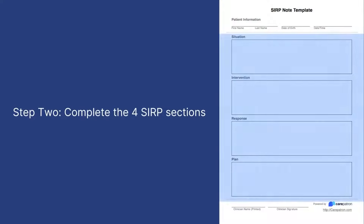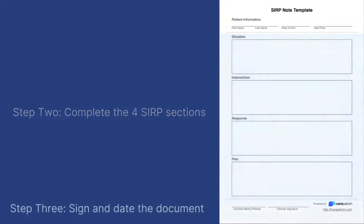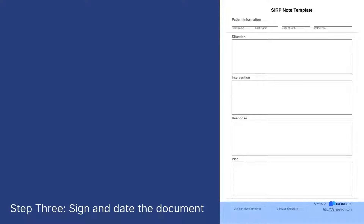The next step is to complete all four SBAR sections — remember to include all supporting evidence here. As the final step, complete your SBAR Note with your signature at the bottom.